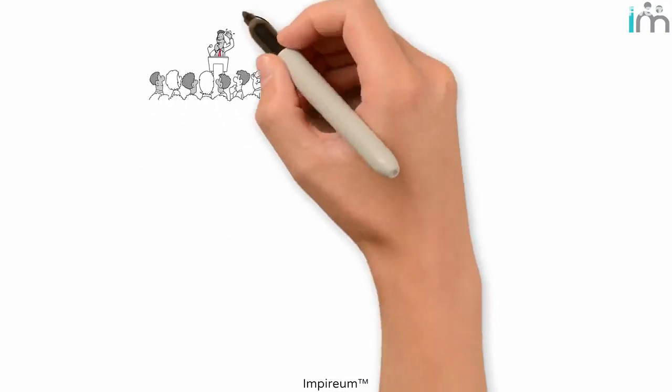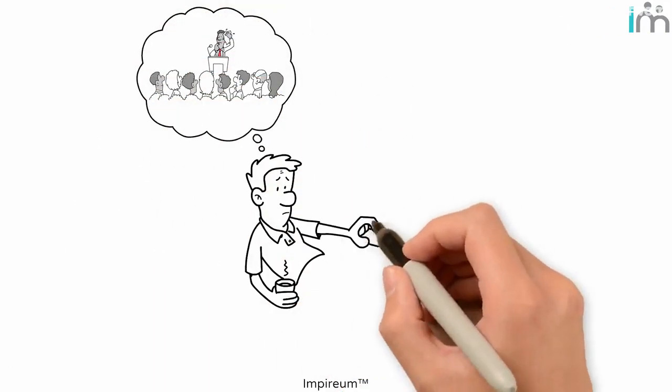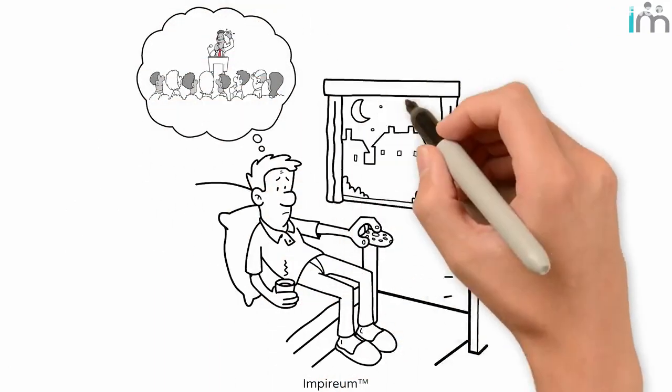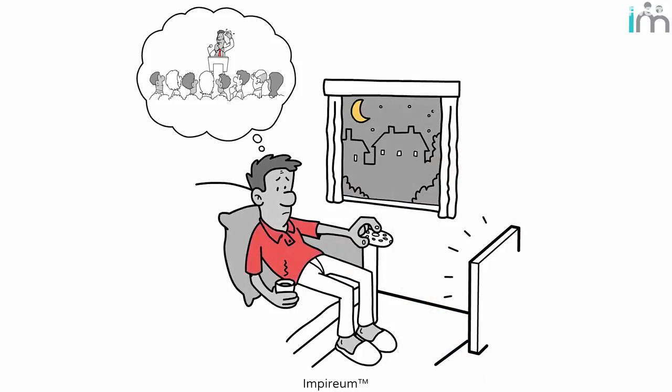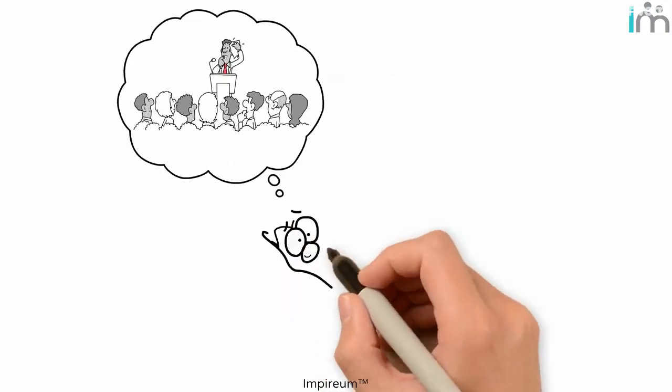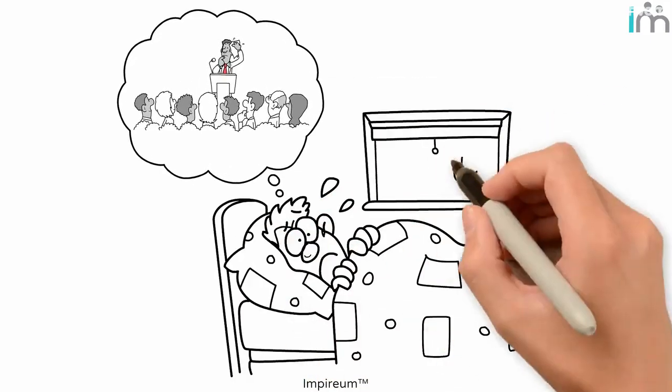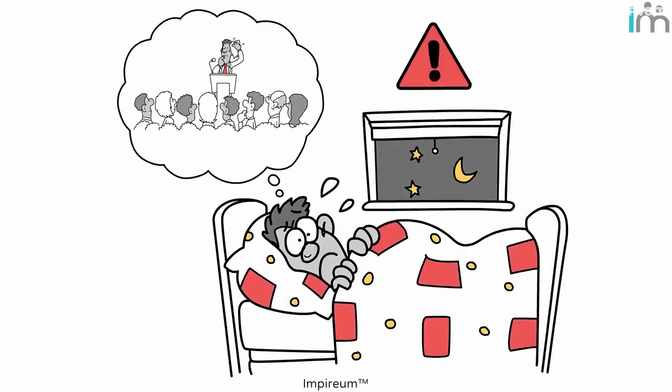But what happens when the source of stress doesn't go away and the anxiety just sort of clings on to you? When feelings of anxiety get too severe and unreasonable, that's a sign they've crossed into disorder territory.